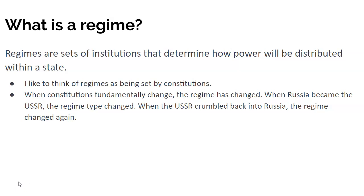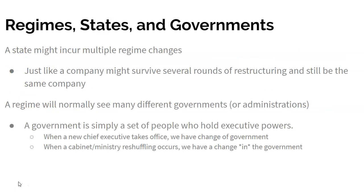And when the Soviet Union crumbled back into the Russian Republic in 1991, the regime type changed again. Note that we're talking about the same state, more or less, and a lot of the same people. But what we're noting is that the fundamental way in which political power is distributed within that territory among those people has changed. So a state might, therefore, incur multiple regime changes, just as noted with the USSR.